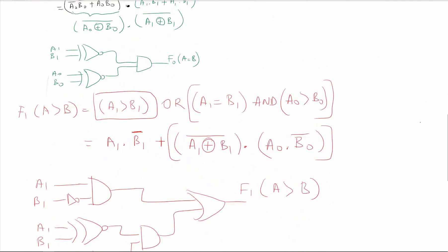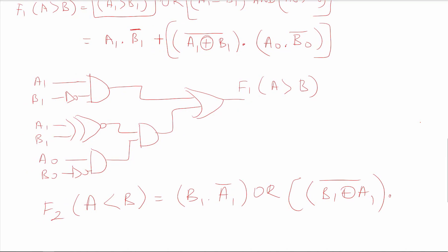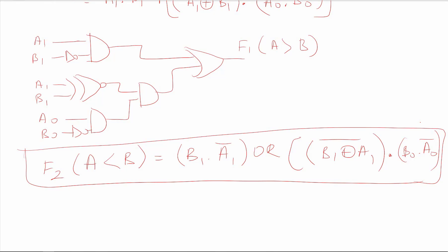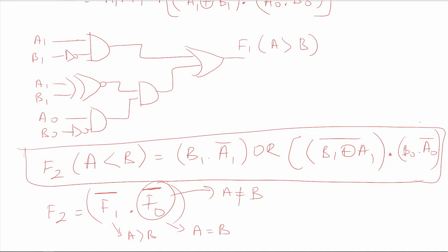For F2 where A is less than B, by symmetry you can write: [B1 AND (NOT A1)] OR [(B1 XNOR A1) AND (B0 AND (NOT A0))]. Alternatively, F2 can be expressed in terms of F0 and F1 as: (NOT F1) AND (NOT F0) — meaning if A is not bigger than B and not equal to B, then A must be less than B. Implementing F2 directly with this simpler equation may be preferable.